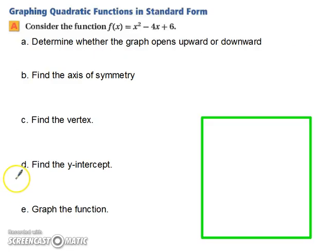Let's practice. Consider the function f of x equals x squared minus 4x plus 6. We want to determine whether the graph opens upward or downward. Well, it's a positive, so we know it's going to open upward. Remember, it's happy. It's positive, so it opens up. Sometimes it's helpful to even draw that in.